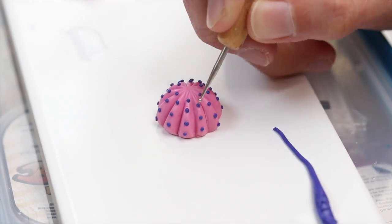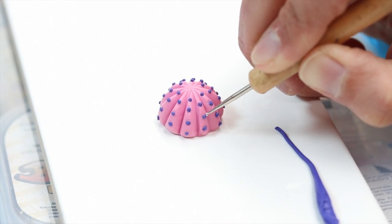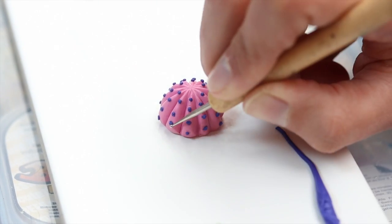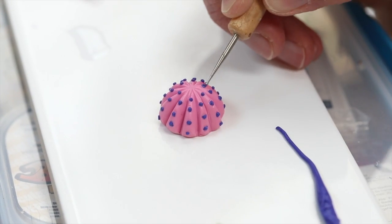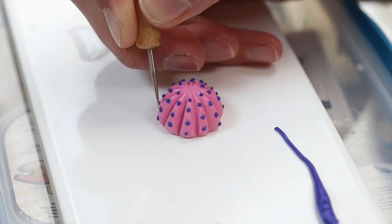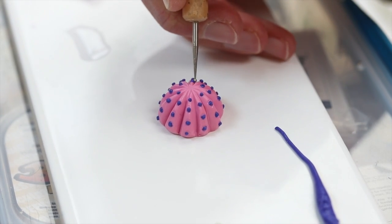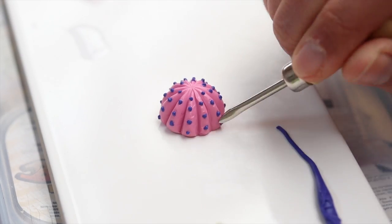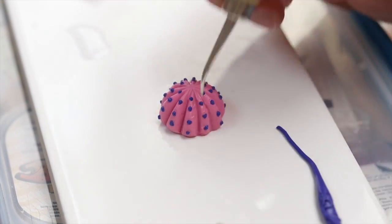And here I'm just rounding the base of the spikes onto the cactus using a ball tool. That way I ensure that it's sticking perfectly to the cactus and that it's not going to fall down after baking. Which yes it might happen if you don't do it properly. As you can see right now it's starting to look like a sea urchin.